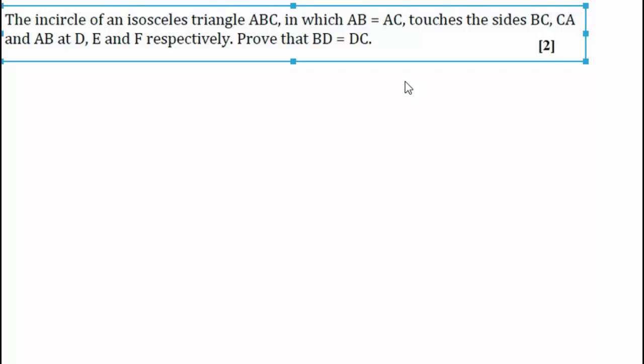The question says the incircle of an isosceles triangle ABC in which AB is equal to AC touches the sides BC, CA and AB at D, E and F respectively. Prove that BD is equal to DC.